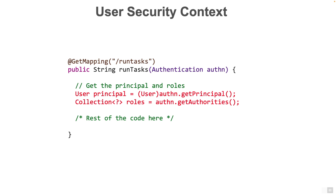Spring Security makes sure that after the authentication of a user, an object of type authentication is set in a security context object for every request, and it is stored in a thread local of the thread which is handling that particular request. A developer can access this authentication object. One way is to simply autowire it as a method parameter. Another way is to use a class called securityContextHolder.